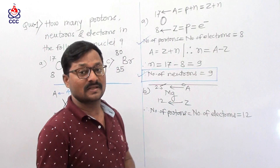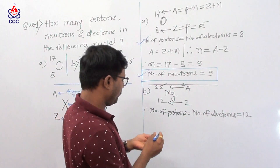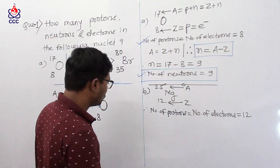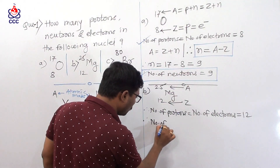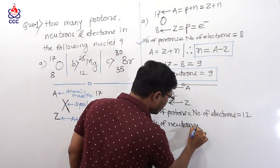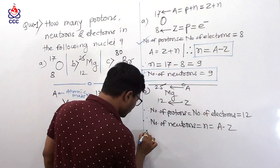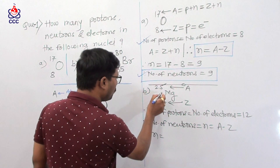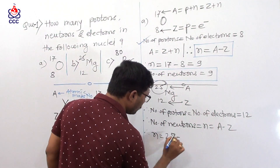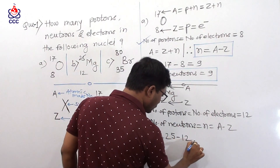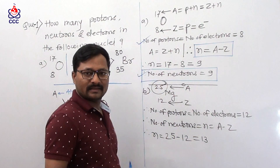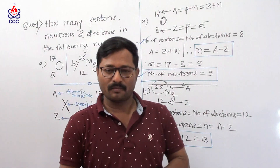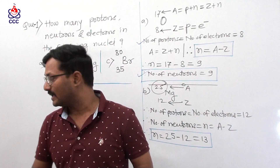Now for number of neutrons, we directly apply the formula. Number of neutrons N is equal to A minus Z. Therefore N equals atomic mass number 25 minus atomic number 12, which equals 13. Therefore, we have number of neutrons equal to 13. This is the number of protons, number of electrons, and number of neutrons in the second case.